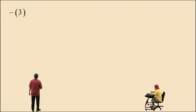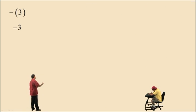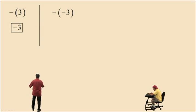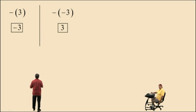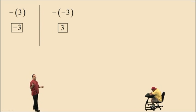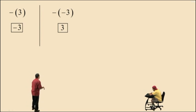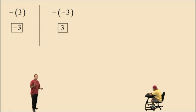So what's the opposite of positive 3? That is negative 3 — opposites of positive numbers are always going to be negative. What's the opposite of negative 3? That's going to be positive 3, because opposites of negative numbers are always positive. You can treat that as negative 1 times negative 3, which is positive 3.